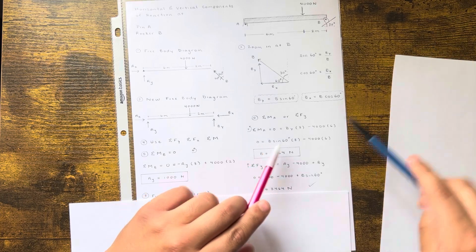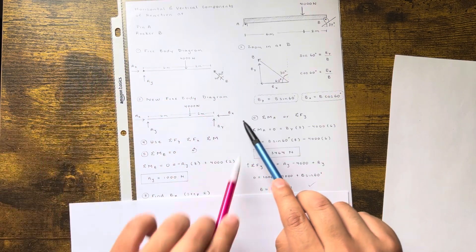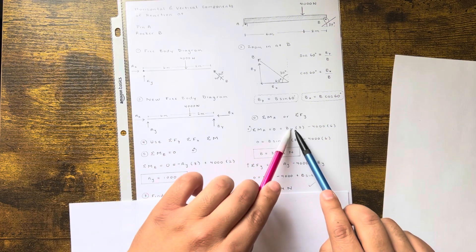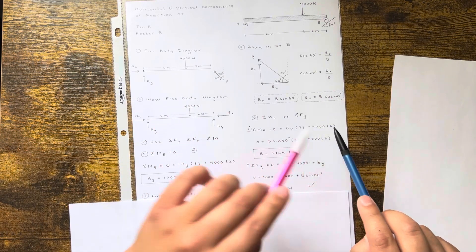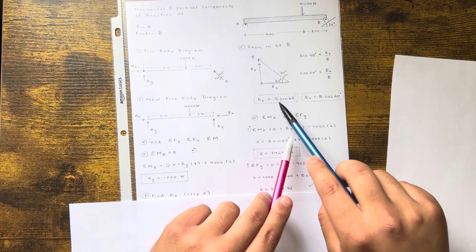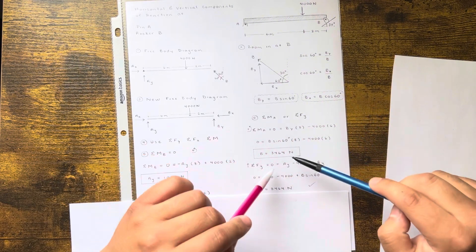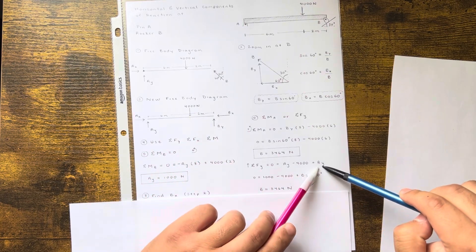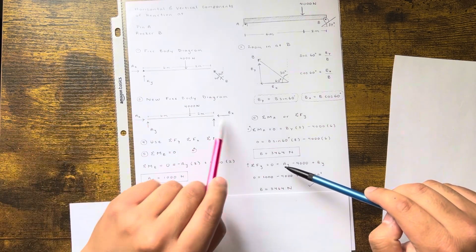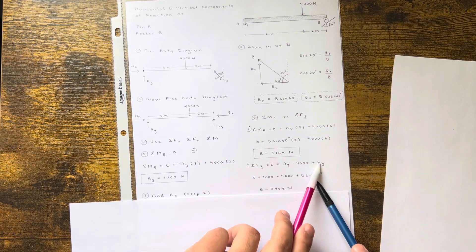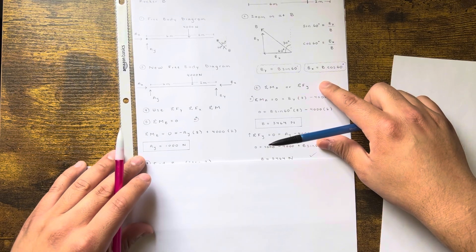Using the moment about A: By × 8 − 4,000 × 6 = 0, so By = 3,000 N. Verifying with sum of forces in y: Ay + By − 4,000 = 0, with By expressed as B·sine 60 from the earlier step — you get the same number, so it checks out.